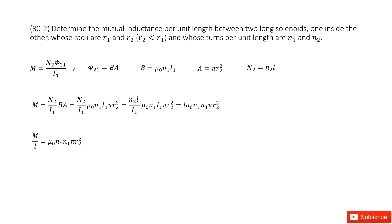So we can see we need to determine the inductance per unit length between two solenoids. The given quantities are R1 and R2, and then N1 and N2.